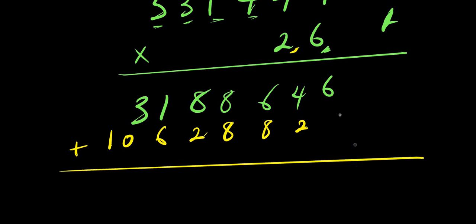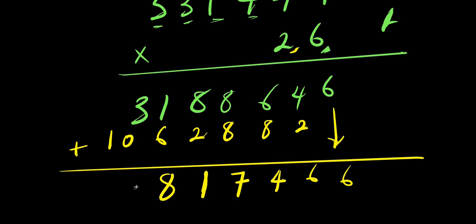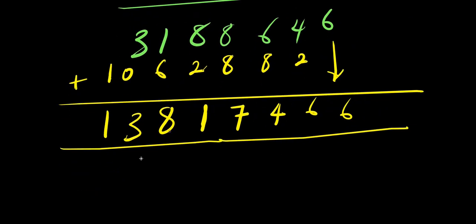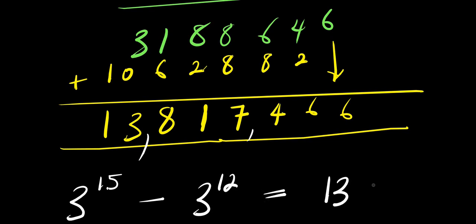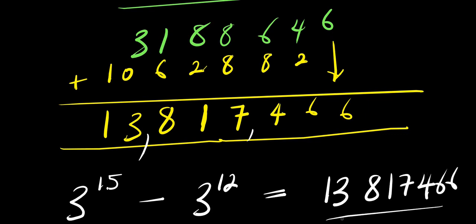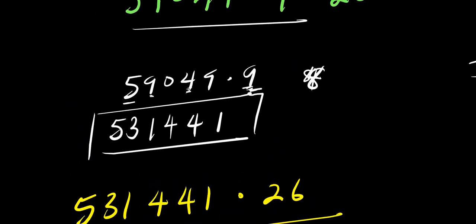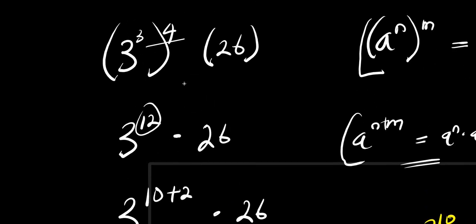Next step will be to add up these together. Bringing down the 6, then 6, then adding gives 4, carry 1, that is 17 — 7 carry 1, that is 11 — 1 carry 1, that is 8, 3 plus 0 is 3, bring the 1 here. So in total we have 18,817,466. So we have 3 to the power of 15 minus 3 to the power of 12 equals 18,817,466. And we have achieved this without the use of a calculator.